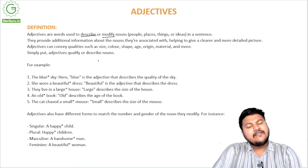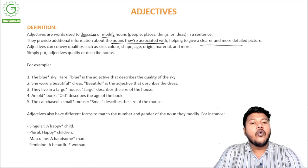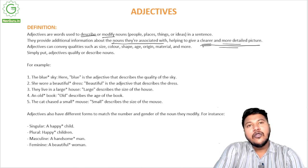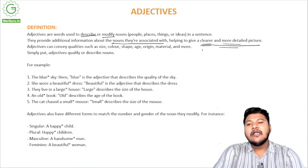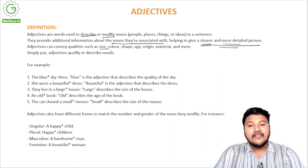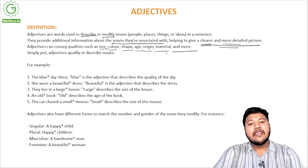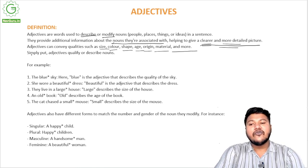What adjectives do is they provide additional information about the nouns they are associated with, helping to give a clearer and more detailed picture. We'll learn why we use 'clearer' and 'more detailed' — those are comparative degrees, which we'll talk about later in the chapter. Adjectives can convey qualities such as size, color, shape, age, origin, material, and so much more.